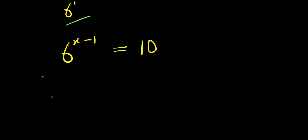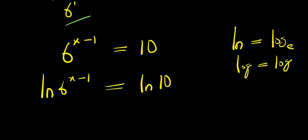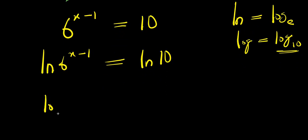Right now I can apply log. I have log of 6 to the power x minus 1 equals log of 10. I should make use of log — remember, natural log is log to the base of e, while log is log to the base of 10. So it will be easier to make use of log because we are working with base 10 here. So I'm going to have log of 6 to the power x minus 1 equals log 10.